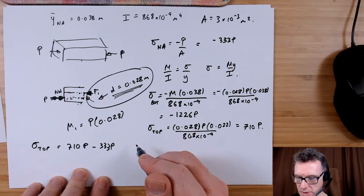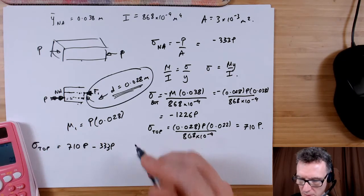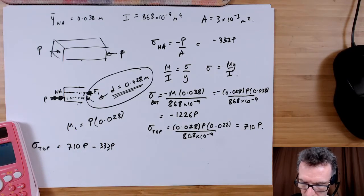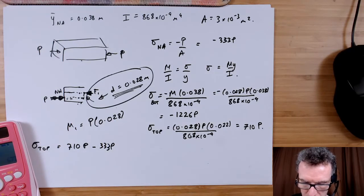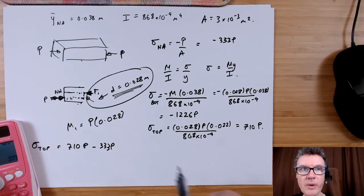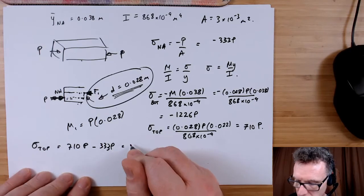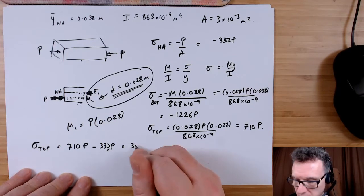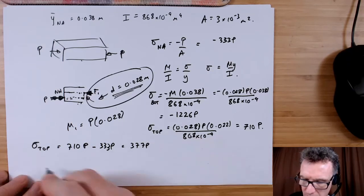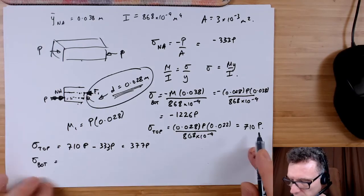I've got that right. So, whoops, 710 take away 333, so I have a positive stress at the top of 377 P. The stress at the bottom will definitely be in compression.